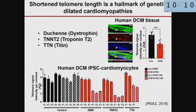We see premature telomere shortening in the nuclei of individuals who have dilated cardiomyopathy — heart failure due to the absence of dystrophin, troponin, or titin, structural proteins essential to contraction. Taking iPSCs from patients' blood, making them into pluripotent cells, and then into cardiomyocytes: the pluripotent cells had normal telomere lengths, and within 10 days of differentiating into cardiomyocytes we saw shortening. You can recapitulate 30 years of disease in 30 days in a dish. These cells also exhibit DNA damage response, mitochondrial failure, and reactive oxygen species, and you can screen for drugs in thousands of wells — something not easily done in mouse models.